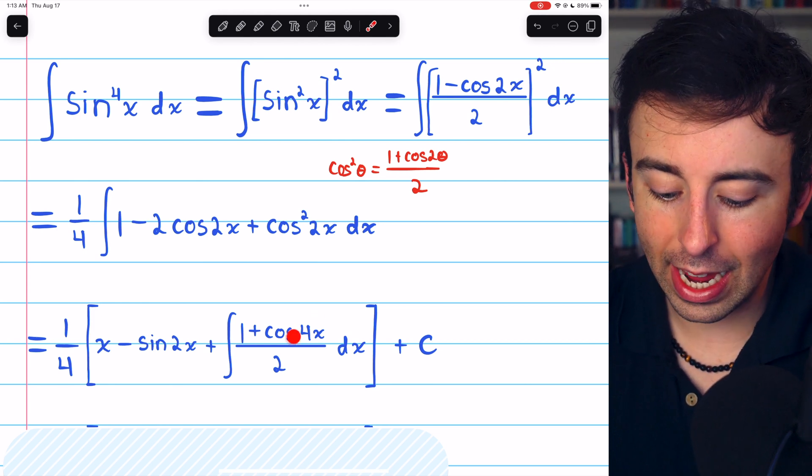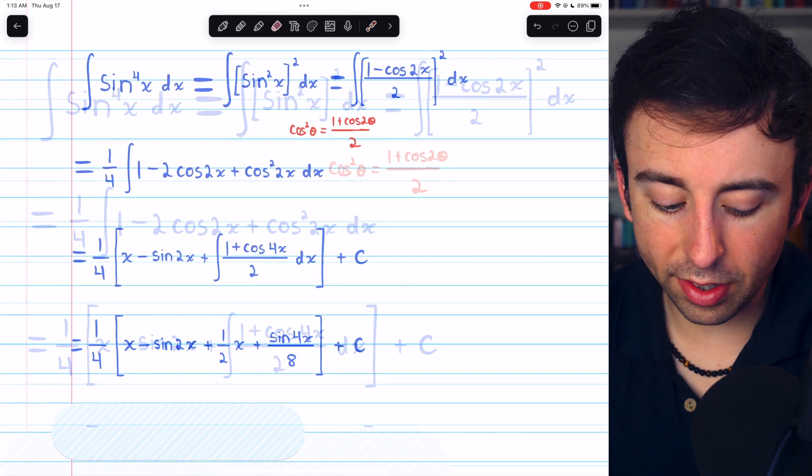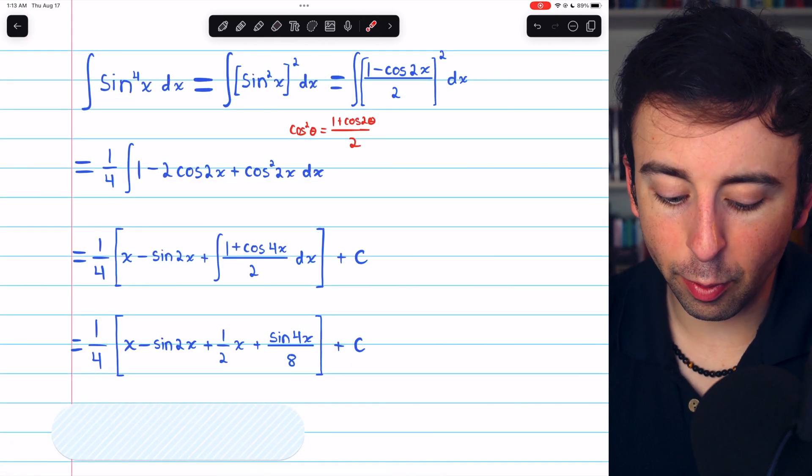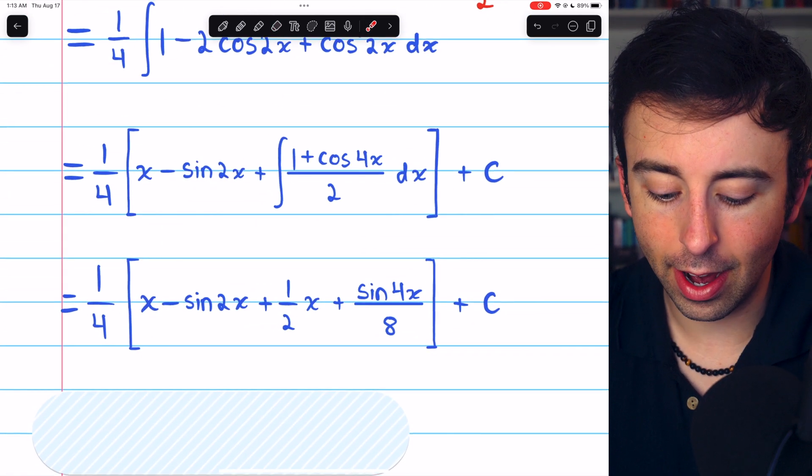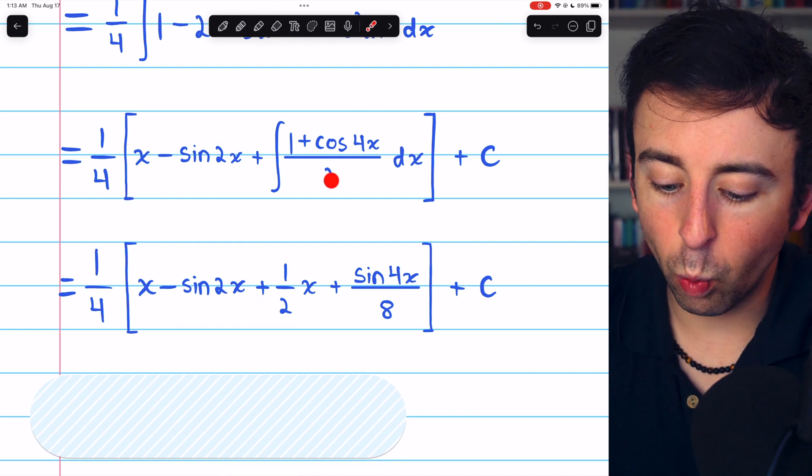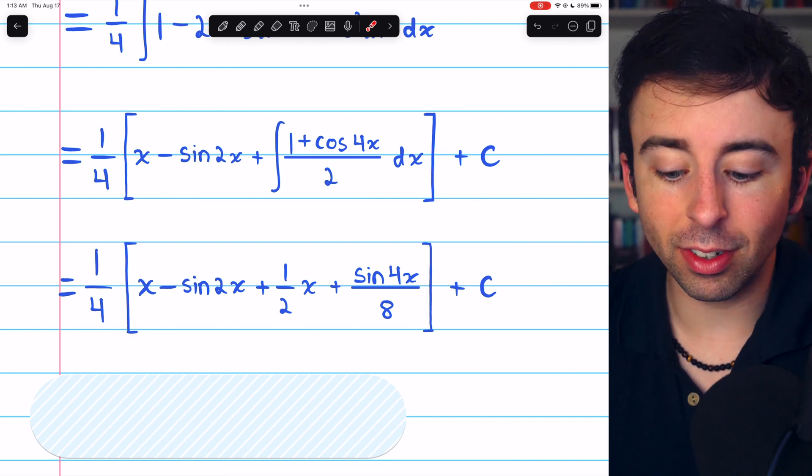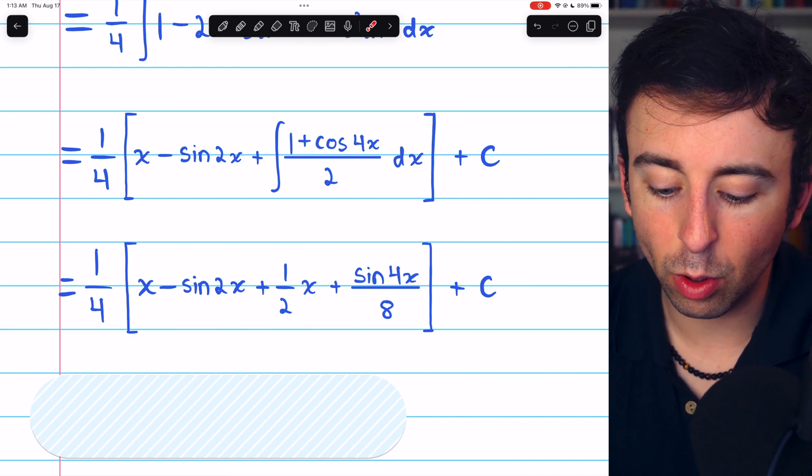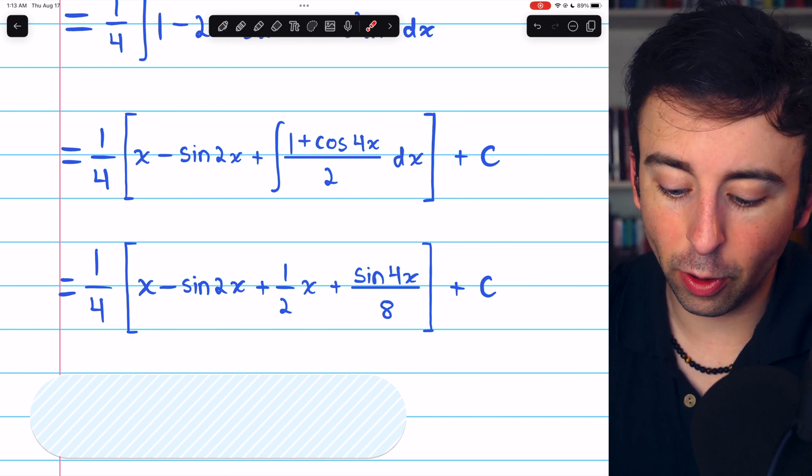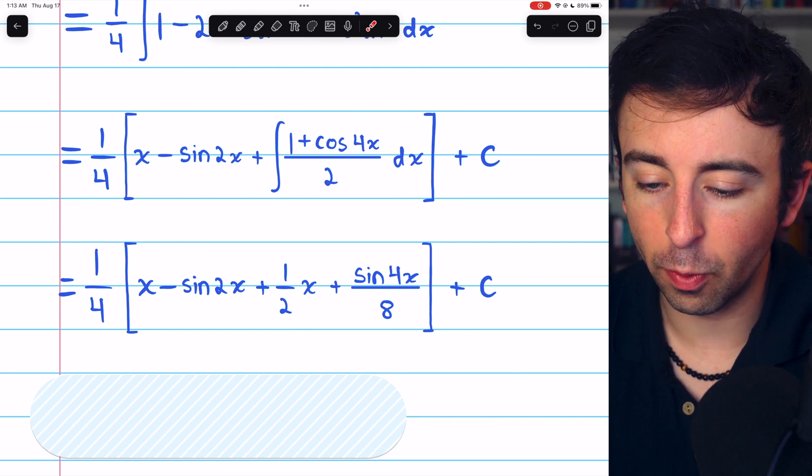In any case, we can now finish the integration. We still have our 1 fourth out front and the x minus sine of 2x. Then, we integrate the 1 over 2 to get 1 half x, which just leaves the cosine 4x over 2, which we can integrate to sine of 4x over 8.